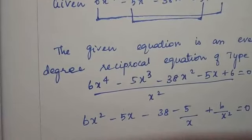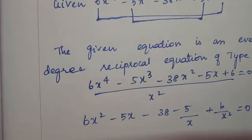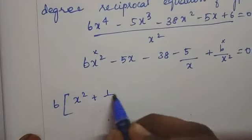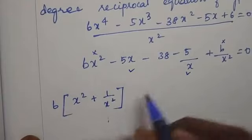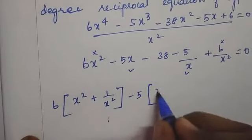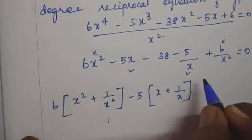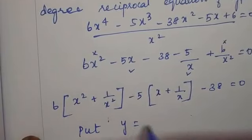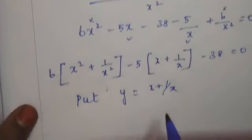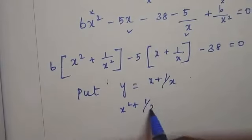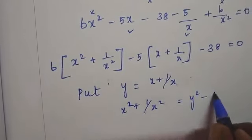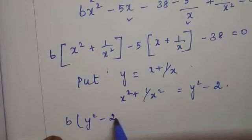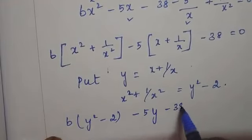Rearranging and grouping with matching coefficients: take 6 as common from the x² and 1/x² terms to get 6(x² + 1/x²), and take -5 as common from the x and 1/x terms to get -5(x + 1/x), minus 38 = 0. Now put y = x + 1/x, so x² + 1/x² = y² - 2.